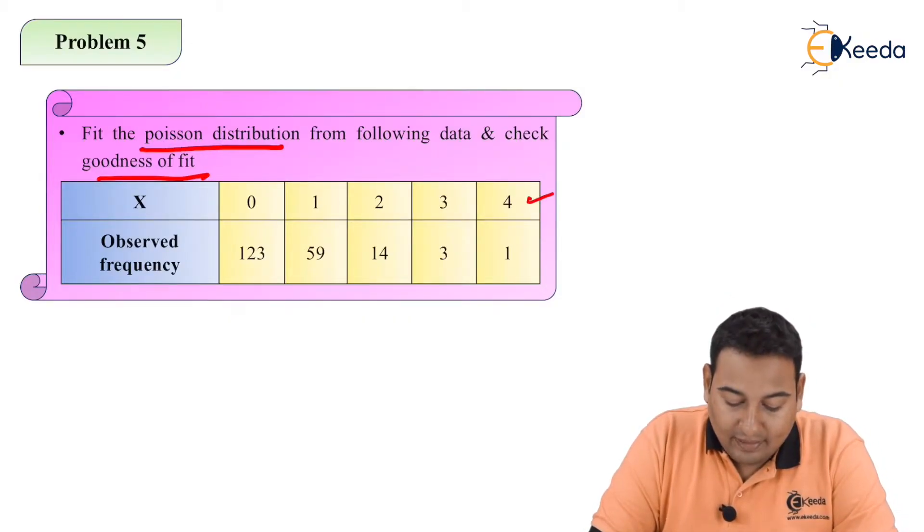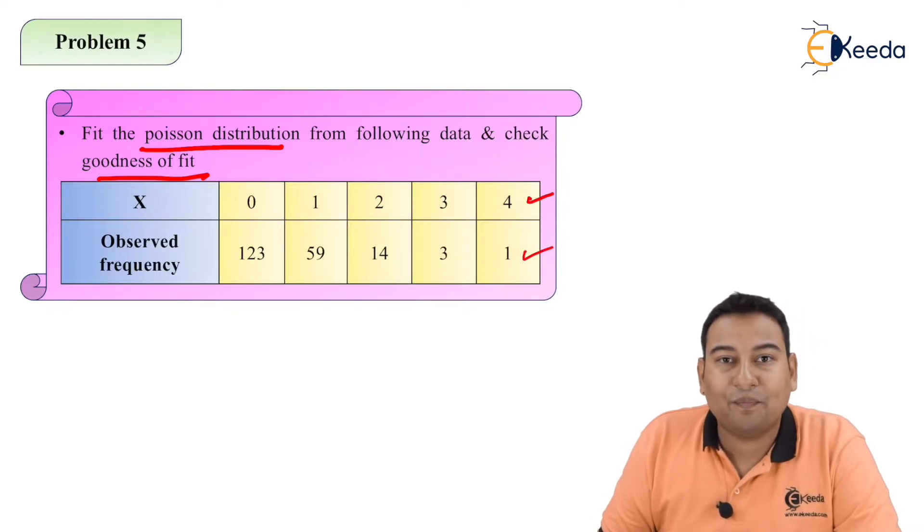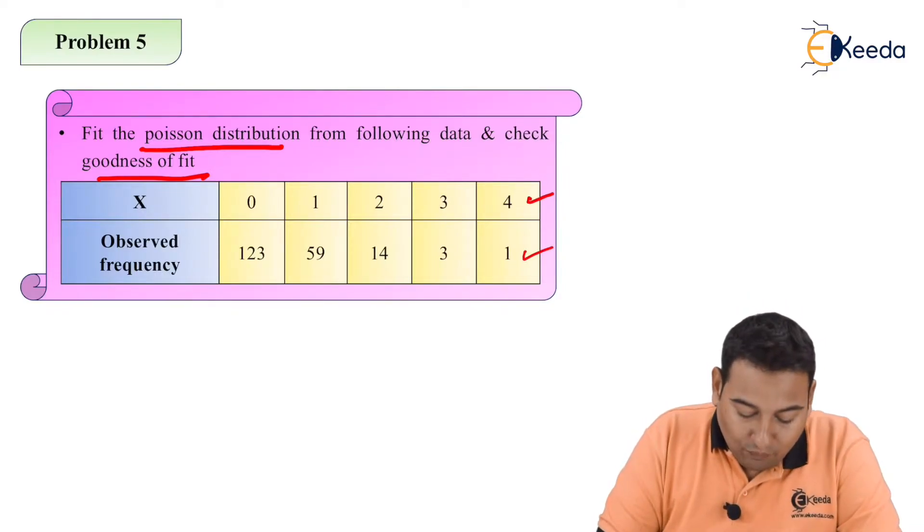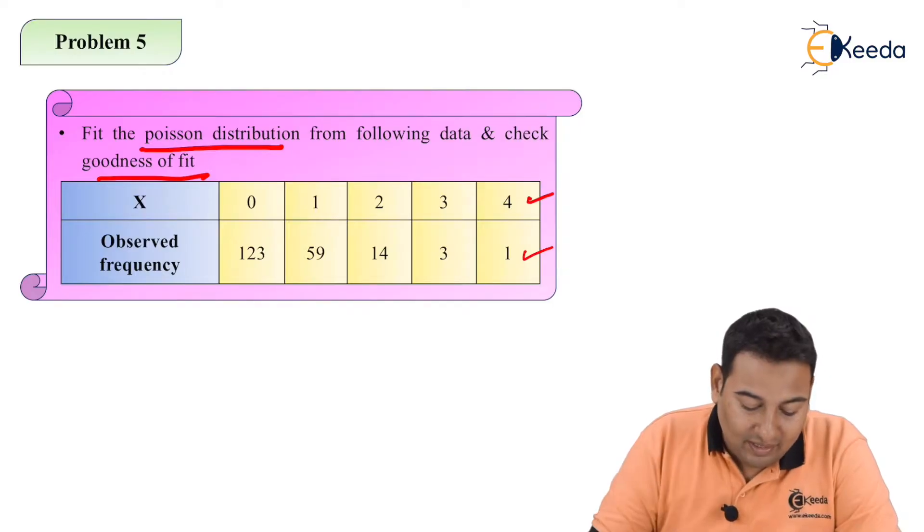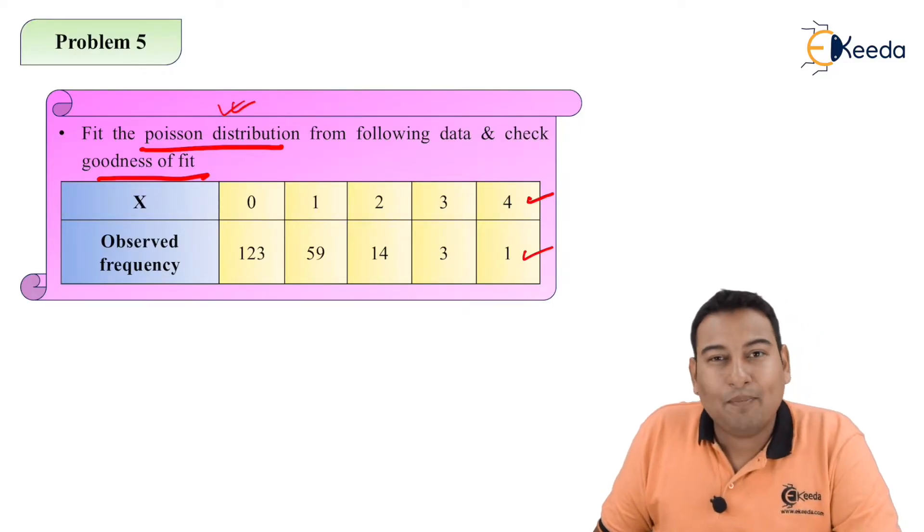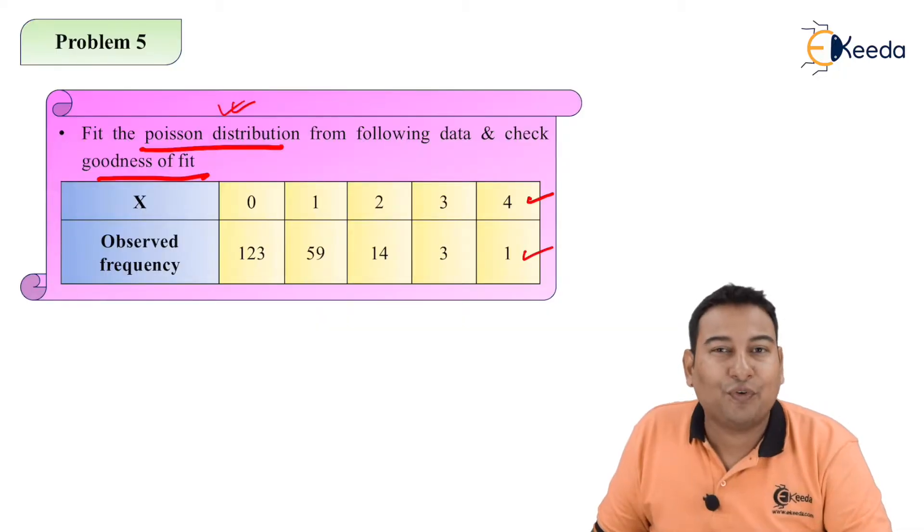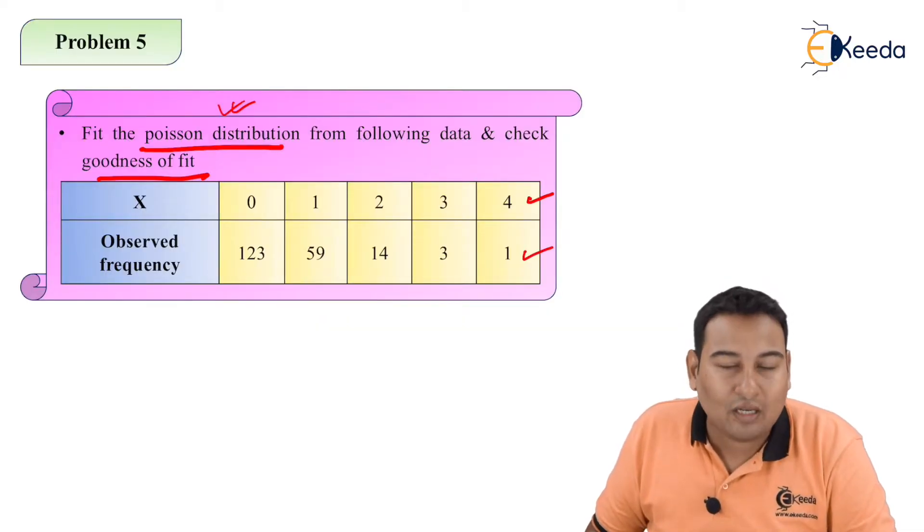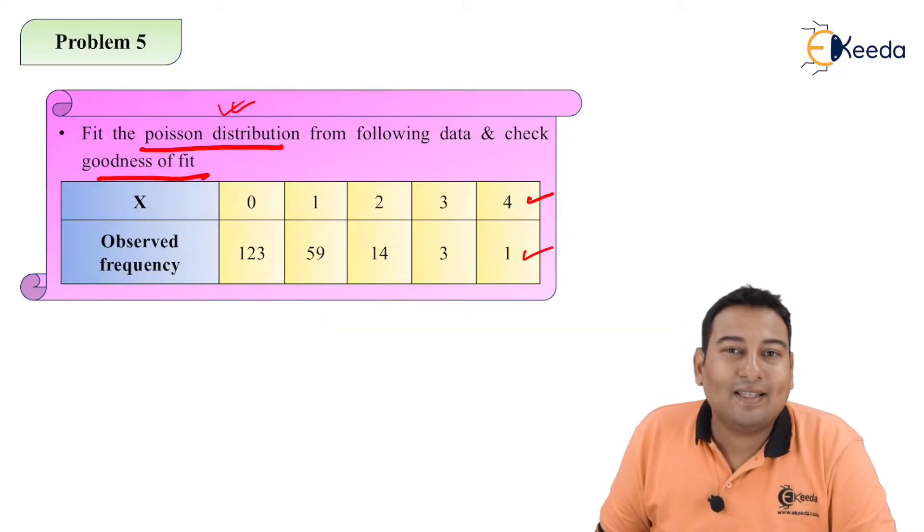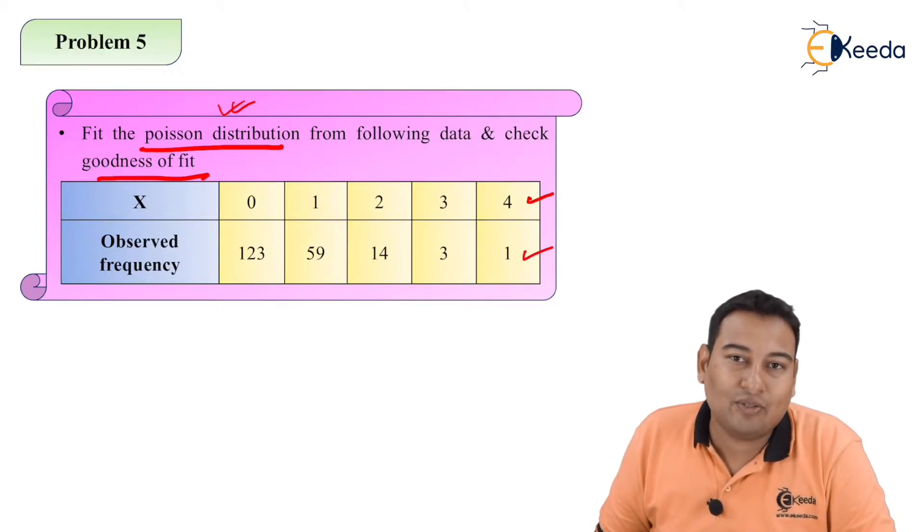Here these are the values of x and these are the observed frequency. That means we need to find out expected frequency by using Poisson distribution. So basically the problem is divided into two parts: first part is we need to fit a Poisson distribution, and the second part is chi-square test.